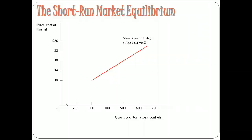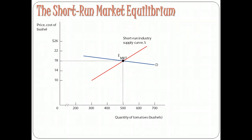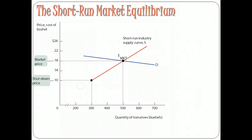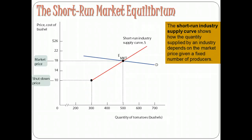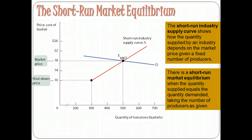We can identify what the price is for individual firms by looking at where the supply curve crosses the industry demand curve. In this case, we've got a market at equilibrium in the short run with $18 per bushel as the price and 500 total bushels being produced by the market. Now just because we're at short-run equilibrium doesn't mean that's where the market will stay. If you remember back to the original curve, there is going to be economic profit at $18.